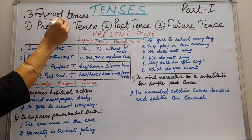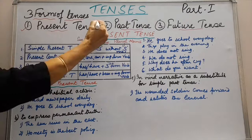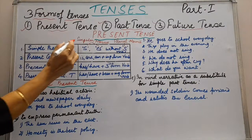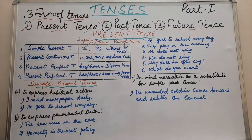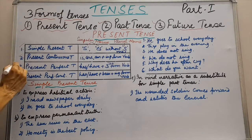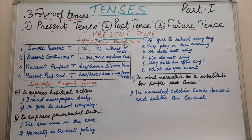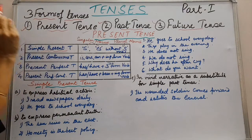There are three forms of tenses: present tense, past tense, and future tense. Today in this video we are going to learn present tense. Now, present tense itself has got four forms. First is simple present tense, second is present continuous tense, third is present perfect tense, and fourth is present perfect continuous tense. Now when we talk about tense, we have to see the verb in the sentence. So let us understand simple present tense first.